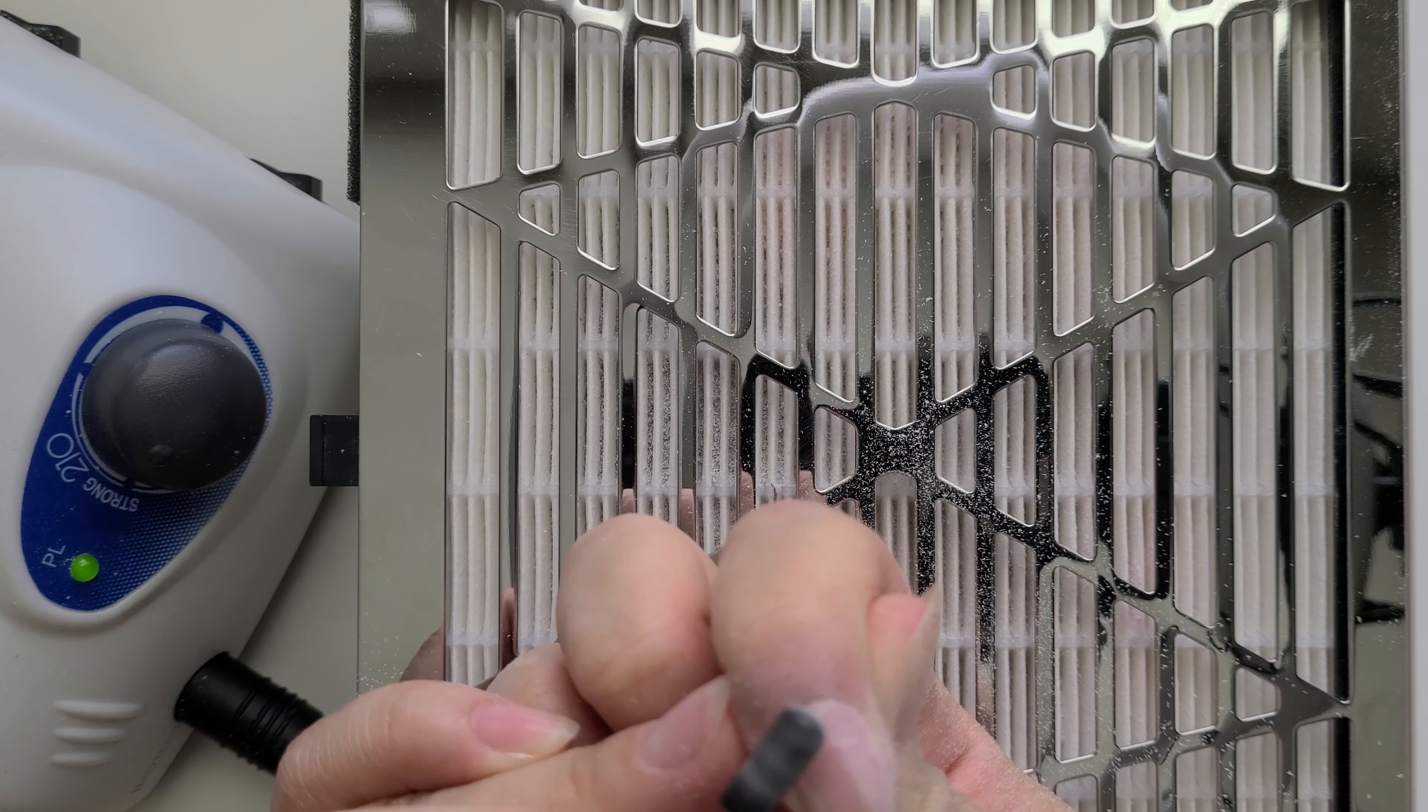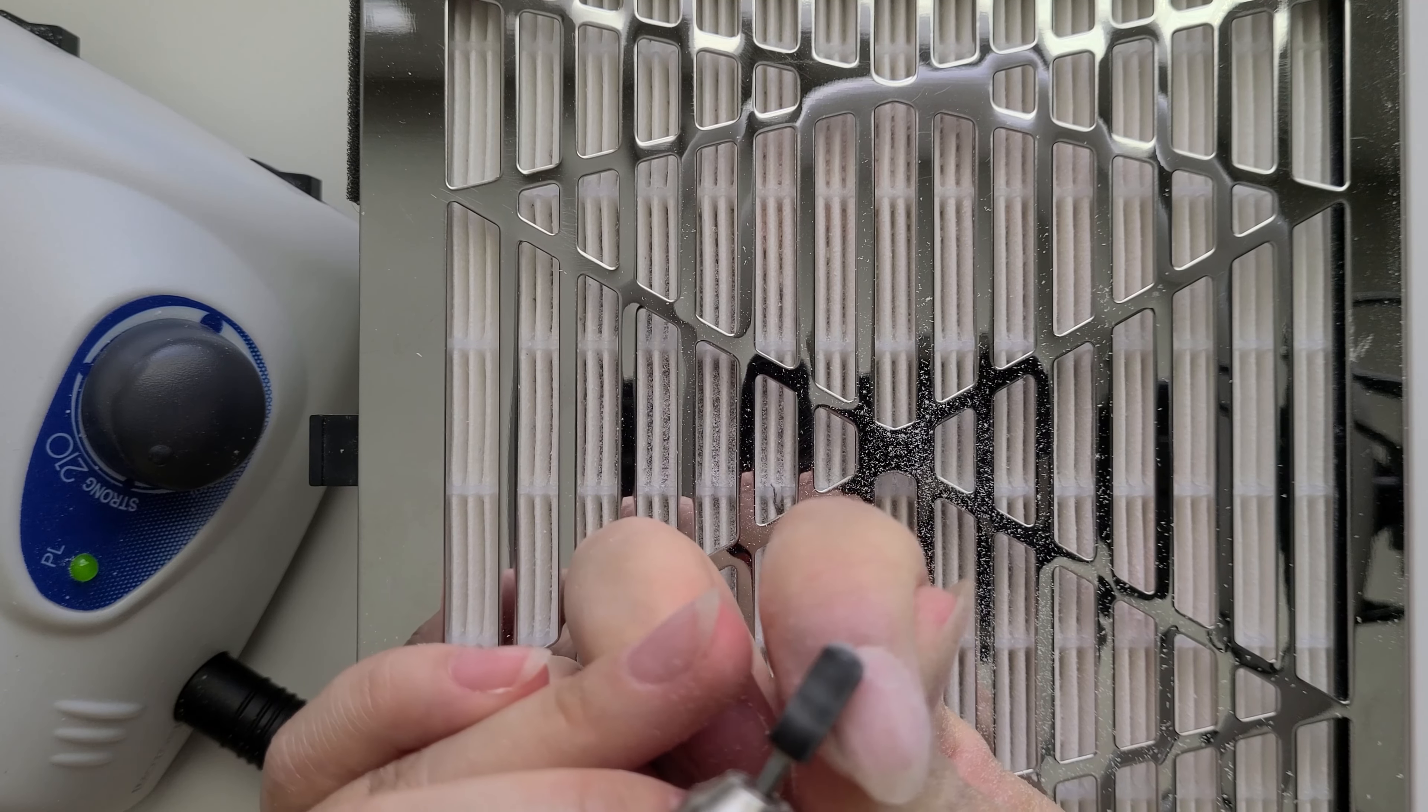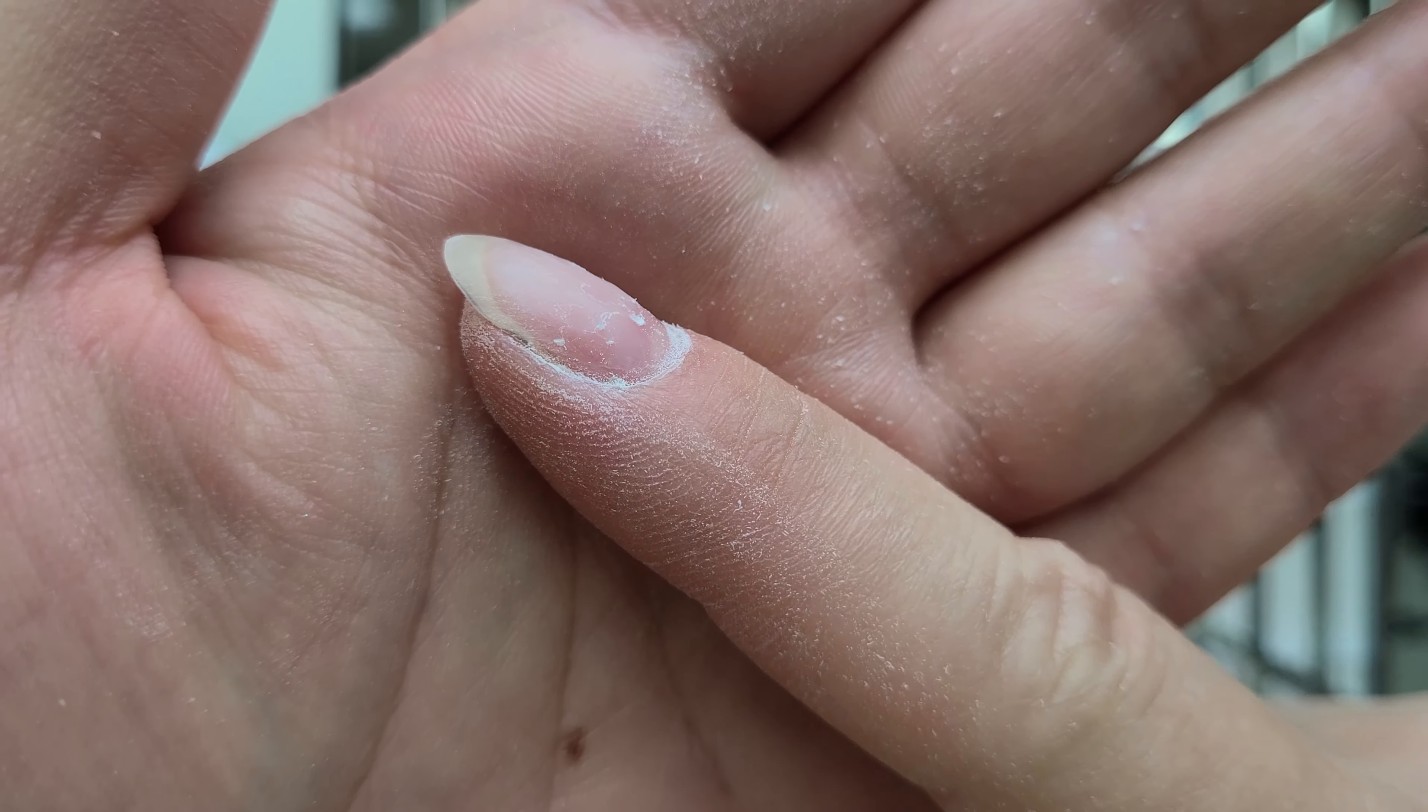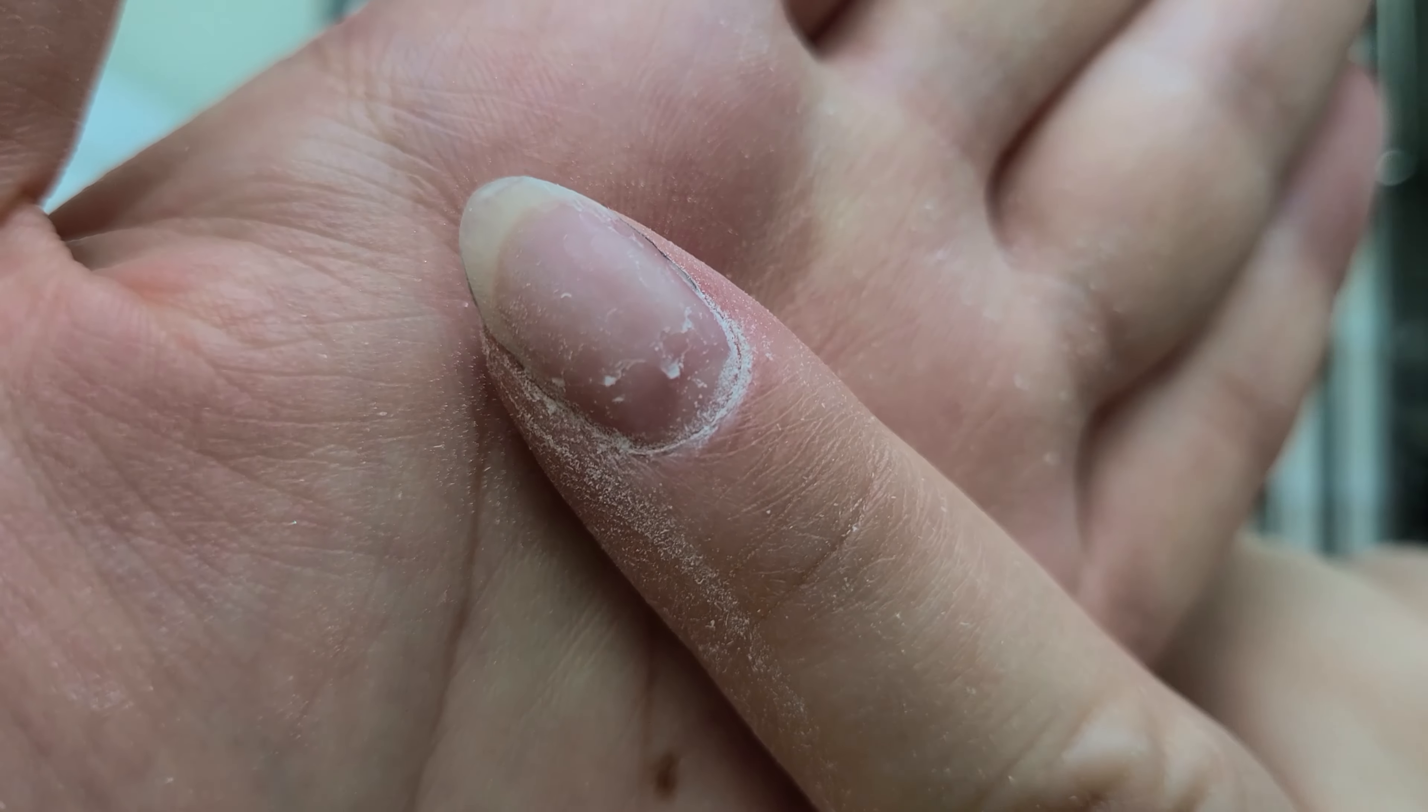The more you file, the less you have to soak off. So the more you can file off the gel, the better it is for the soaking off process, which is step three.